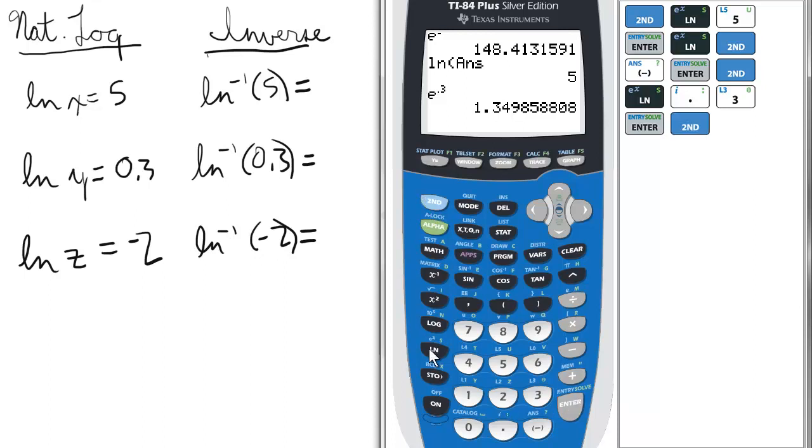So we press 2nd, ln, to access the inverse natural log form and type in negative 2.